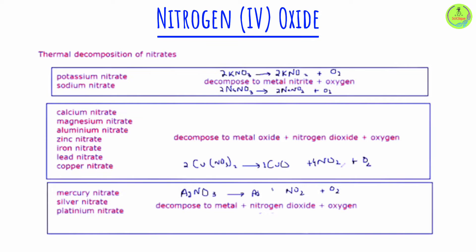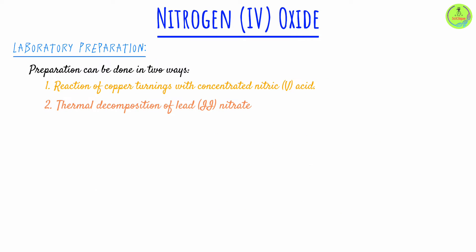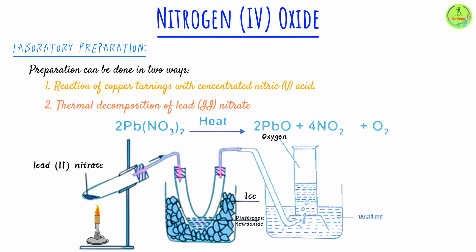On heating, these moderately reactive metal nitrates decompose, leading to the production of NO₂ gas. Lead(II) nitrate is the most suitable because it is not hydrated — it does not have water of crystallization. If there had been water of crystallization, it would interfere with the preparation of the gas since nitrogen dioxide is quite soluble in water. On heating lead(II) nitrate, it decomposes to form three products: lead(II) oxide, nitrogen dioxide, and oxygen gas.